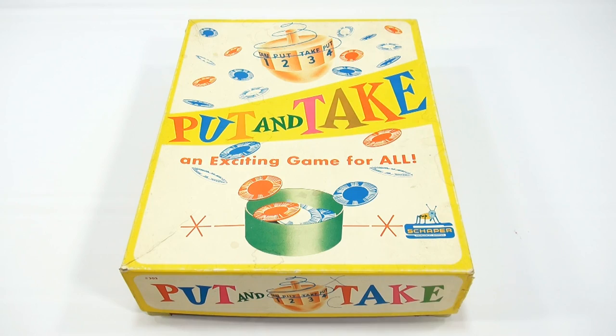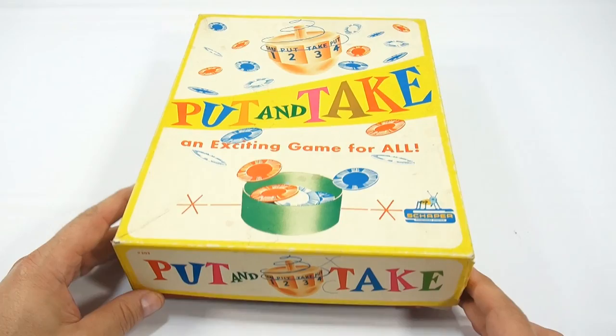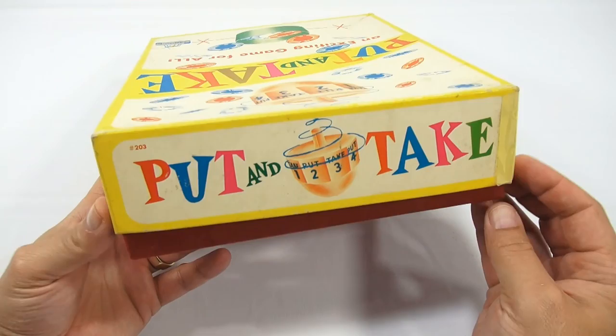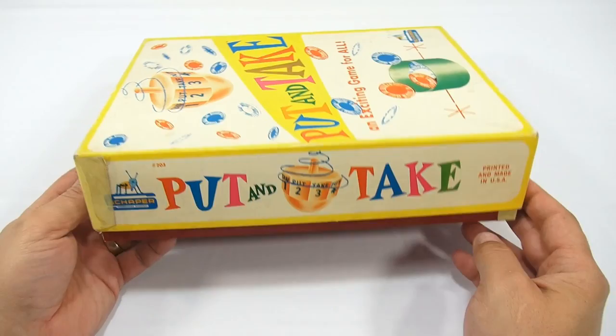Hey it's Lucky Penny Shop and it's time for a game called put and take, an exciting game for all. This is a Schopper game and the graphics on the side are pretty much the same all the way around. It says number 203. I don't know if any of you had this game but there are so many versions of it and names of it that I'm sure you have at one time seen it or a version.